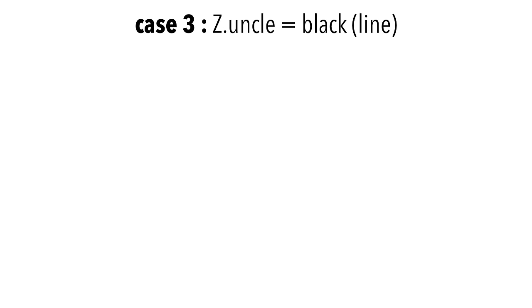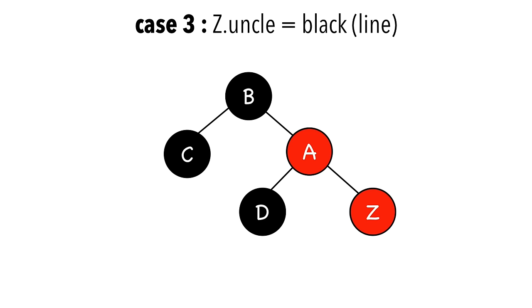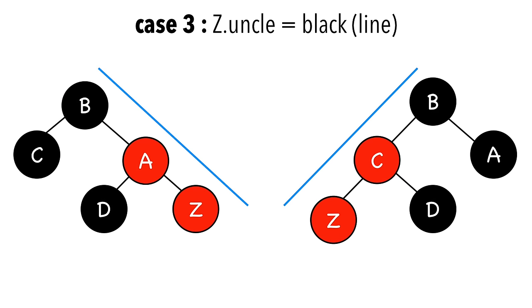Finally, case 3 is when Z's uncle is black, with line as the identifier. Again, C is Z's uncle, but as you can see, Z, Z's parent, and Z's grandparent form a line. That's because Z is a right child, and so is his parent A. The symmetrical situation is when they are both left children.